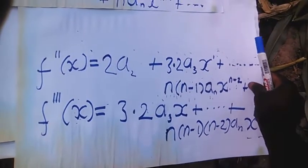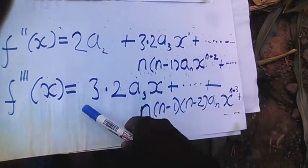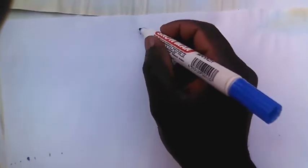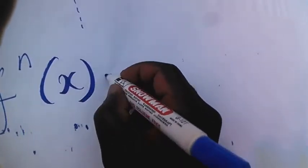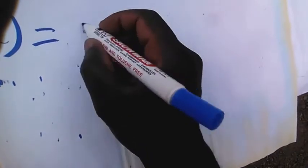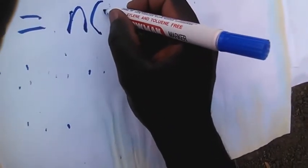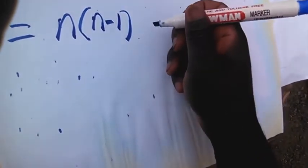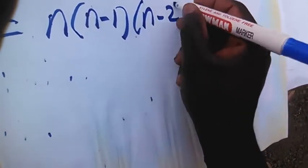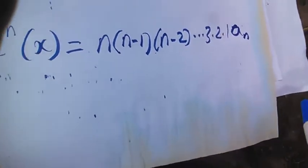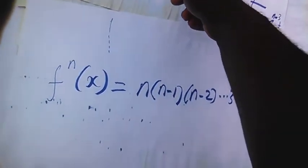If we differentiate again, the same trend will continue. When we differentiate up to the nth term, the nth derivative of f(x) will be n times n minus 1 times n minus 2, down to 3, 2, 1, times An, times x to the power 0. As you can observe from the pattern, each term ends with x to the power 0.